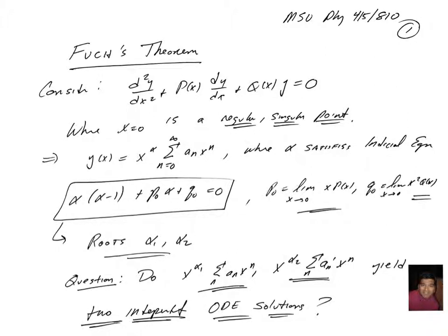Hi class. Last time we saw how we could use the method of Frobenius to solve a second order linear differential equation of this form where p and q were functions of x that were potentially somewhat singular. P of x could blow up as fast as something proportional to 1 over x, and q of x as fast as something proportional to 1 over x squared as x goes to 0.